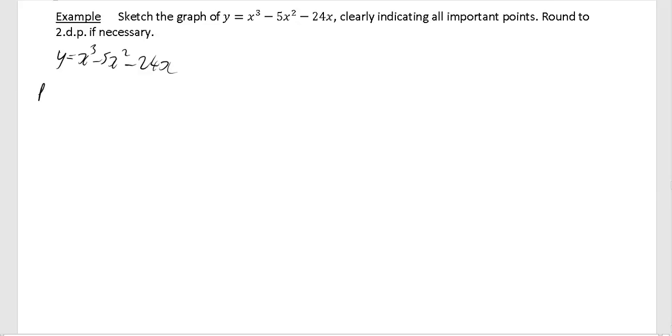We're going to put x equal to 0 so that we can find out where the curve crosses the y-axis. If you put x equal to 0, you're going to have 0 cubed minus 5 times 0 squared minus 24 times 0, which is just 0. Every time you get a new coordinate, write it down. So our first coordinate is (0,0). Our curve has to go through (0,0).